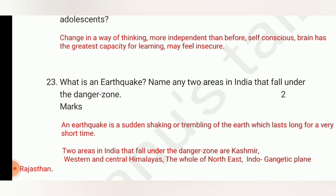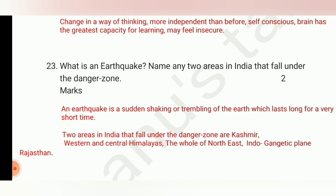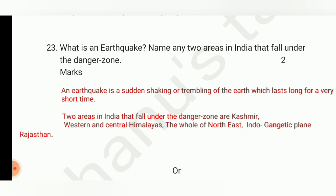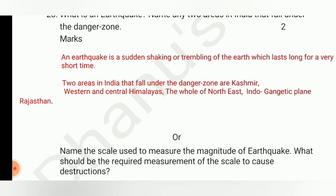Question number 23: what is an earthquake? Name any two areas in India that fall under the danger zone. An earthquake is a sudden shaking or trembling of the earth which lasts for a very short time. Two danger zones are: Kashmir or the western and central Himalayas, the whole of north-east India, the Indo-Gangetic plain, and Rajasthan — write any two.